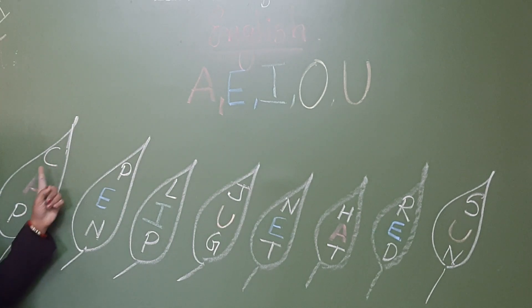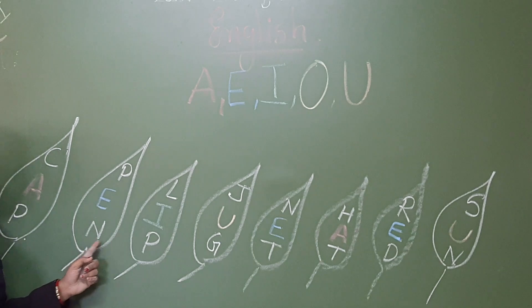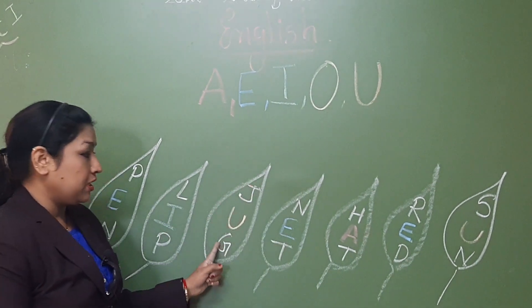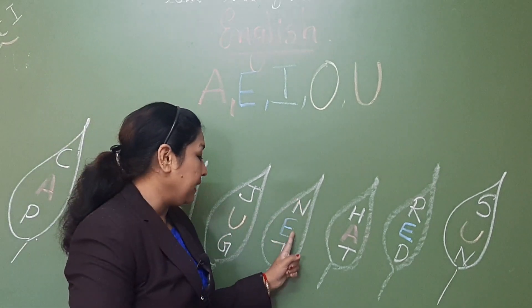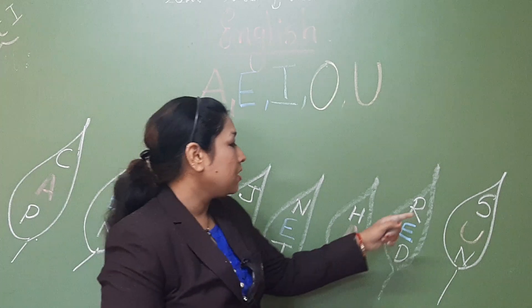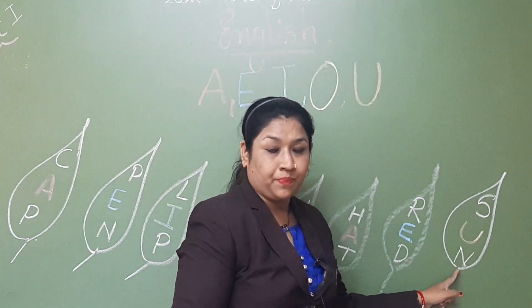Now we will repeat the words. C, A, P, cap. P, E, N, pen. L, I, P, lip. J, U, G, jug. N, E, T, net. H, A, T, hat. R, E, D, red. S, U, N, sun.